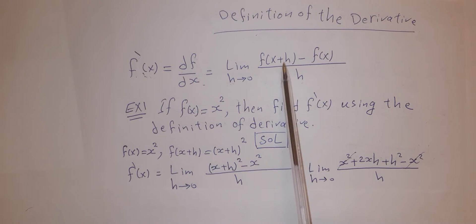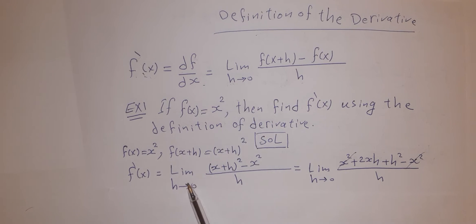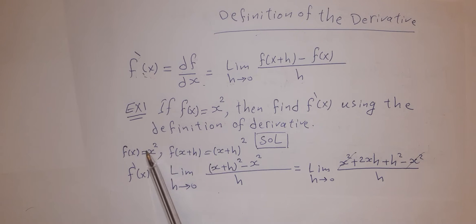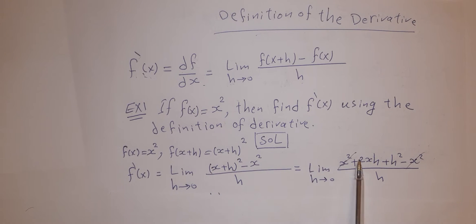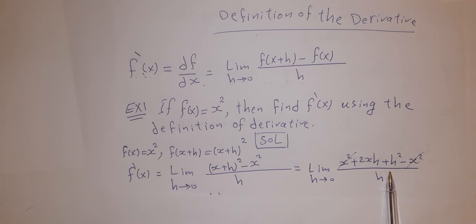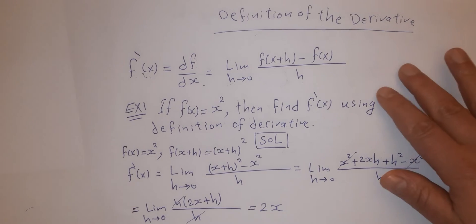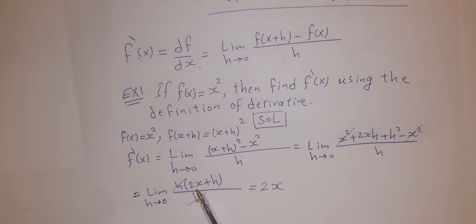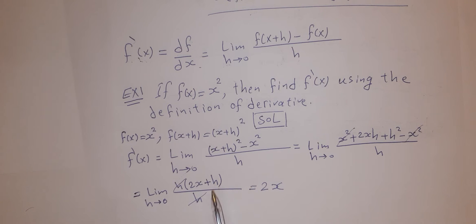Now substitute into the rule: limit as h→0 of [(x+h)² − x²] / h. Expanding: (x+h)² = x² + 2xh + h², so x² − x² = 0. Factor out h: limit of h(2x + h) / h. Cancel h, then substitute h = 0 to get 2x. So the derivative of x² is 2x.